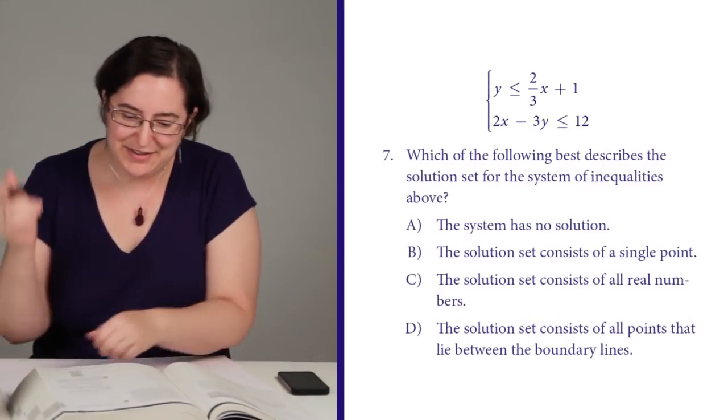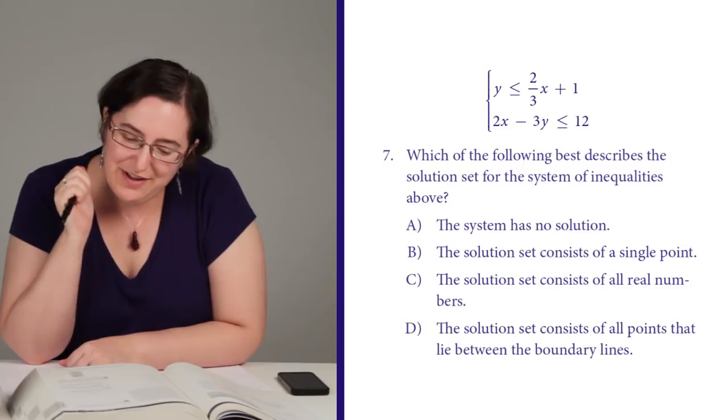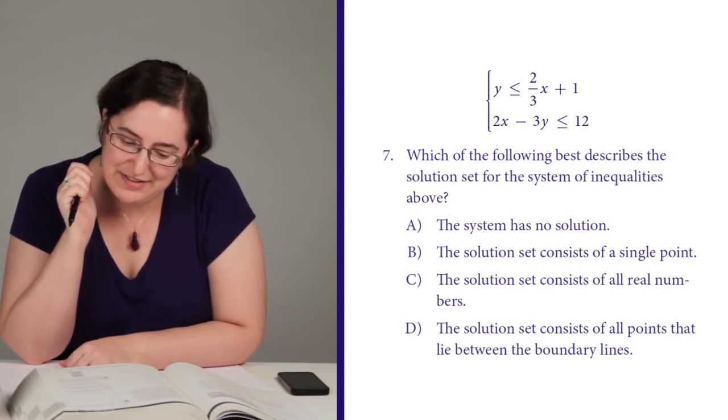All right, last one, page 83. Again, question number seven. Let me get myself a new sheet of paper in case I need more space. Sometimes these things take up a lot of room. Which of the following best describes the solution set for the system of inequalities above.